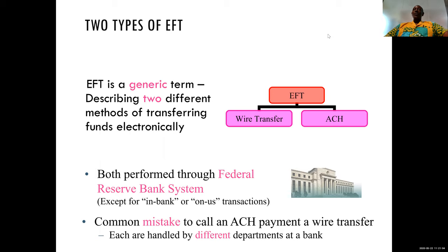There are essentially two types of electronic transfer: we have what we call the wire transfer, and then the ACH, which is the Automated Clearinghouse. These are the two major traditional methods of transferring cash, though recently there have been a lot of other ways and methods of transferring cash seamlessly.